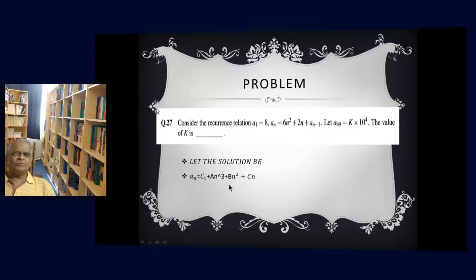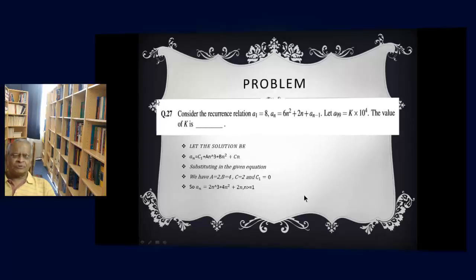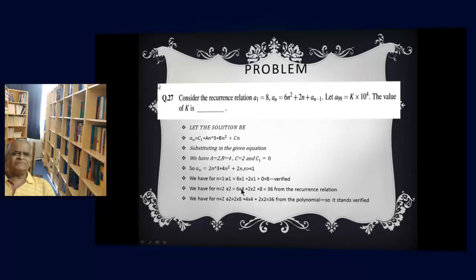Let us assume an = an³ plus bn² plus cn plus c1. We substitute this in the given recurrence relation and equate. I will get a equals 2, b equals 4, c equals 2 and c1 equals 0. I will get the polynomial as 2n³ plus 4n² plus 2n. Let us verify it.